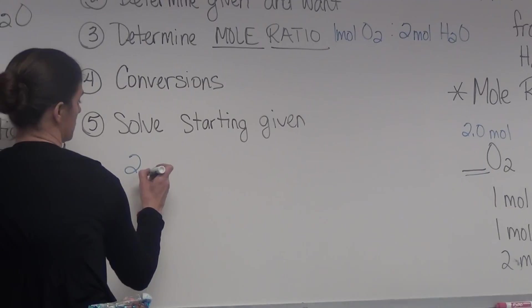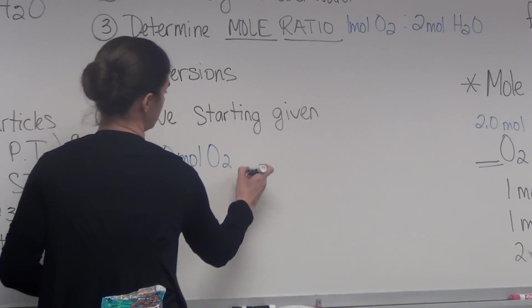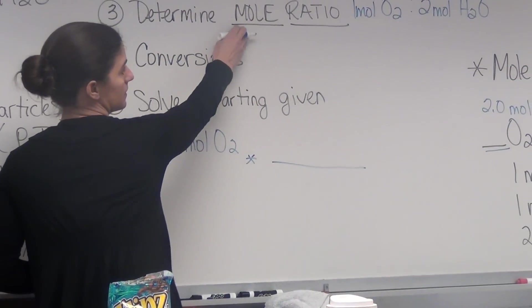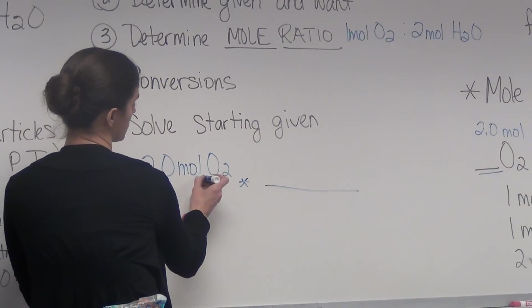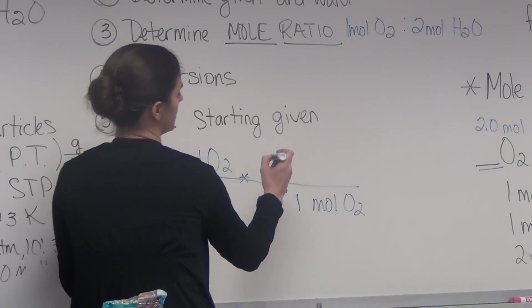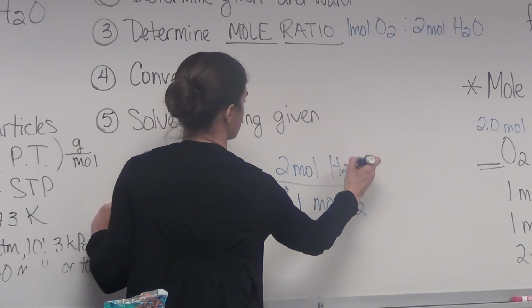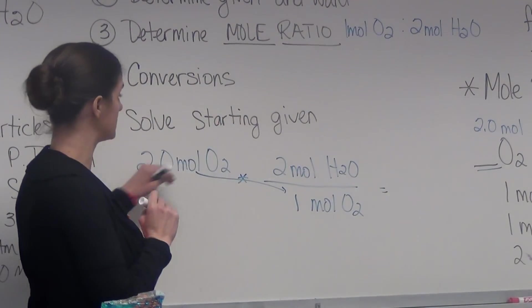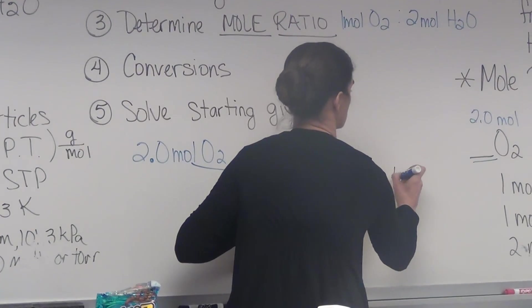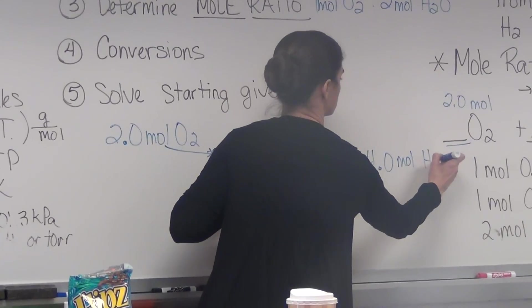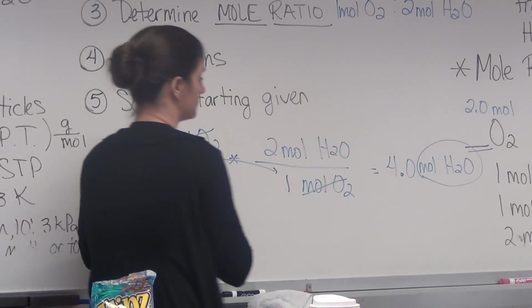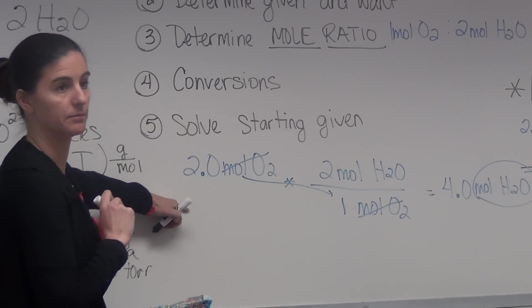And then we're going to solve it. So start with your given. 2.0 moles of O2. Since we're at moles, the only way to get from one substance to another substance is our mole ratio. So we're going to bring down our moles of oxygen. The mole ratio is 1 mole, 2 moles of H2O. That's what we're trying to find. So that's the entire problem is 2 times 2 divided by 1, which is going to give us 4.0 moles of H2O. These will cancel and we're left with what we're trying to find, the moles of water. That's how you do a stoichiometry problem. And then I'll give you some examples.